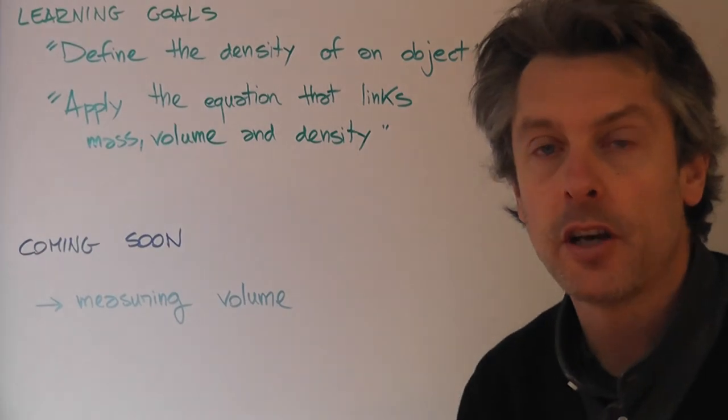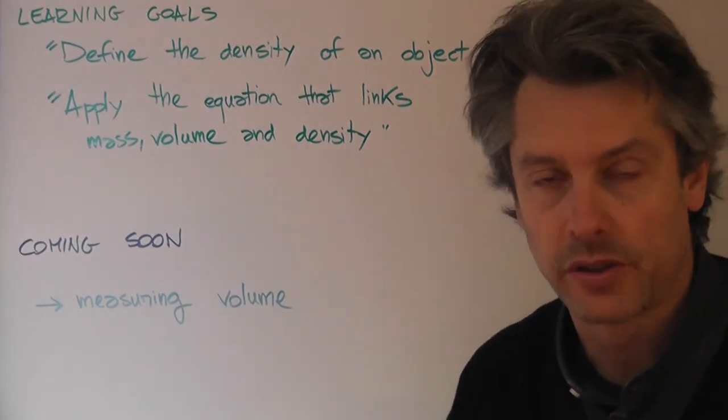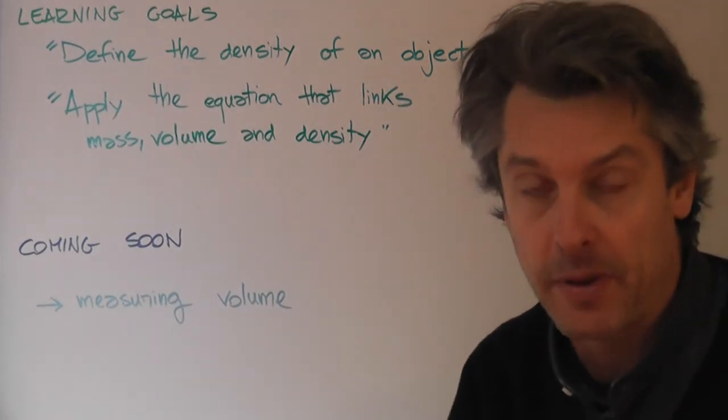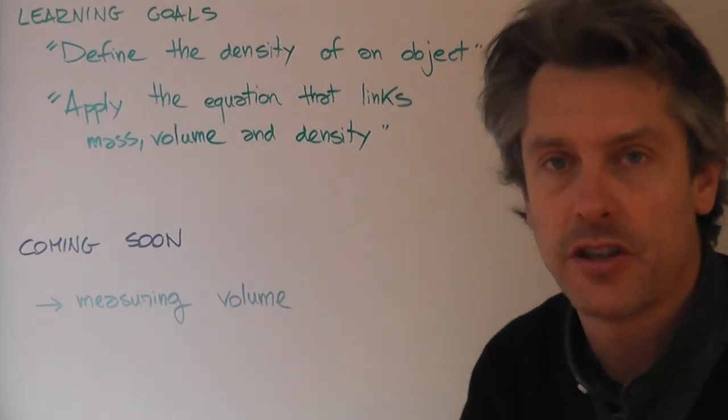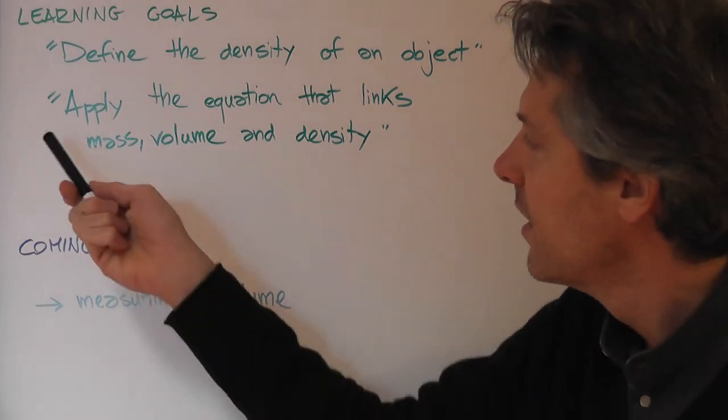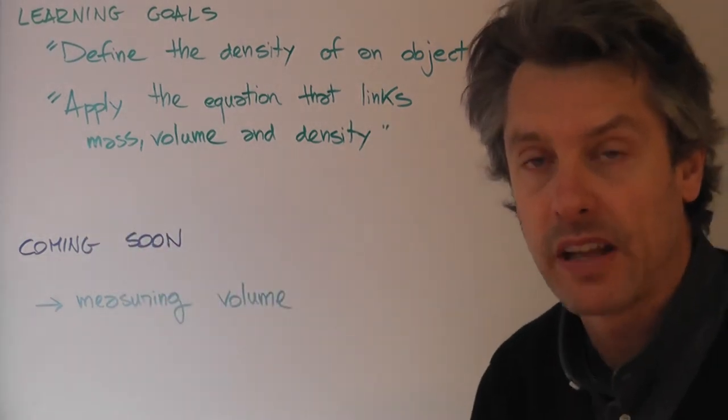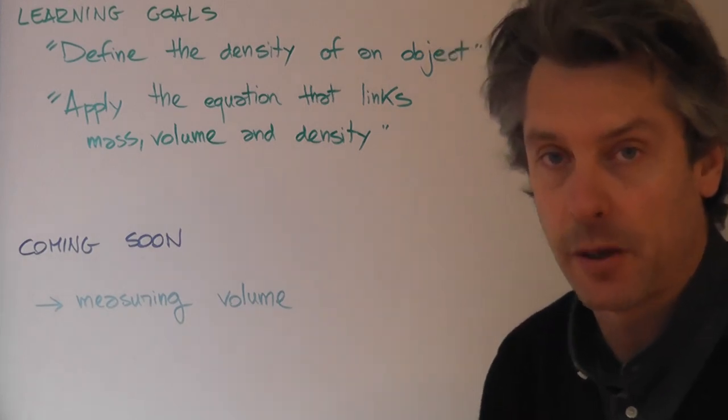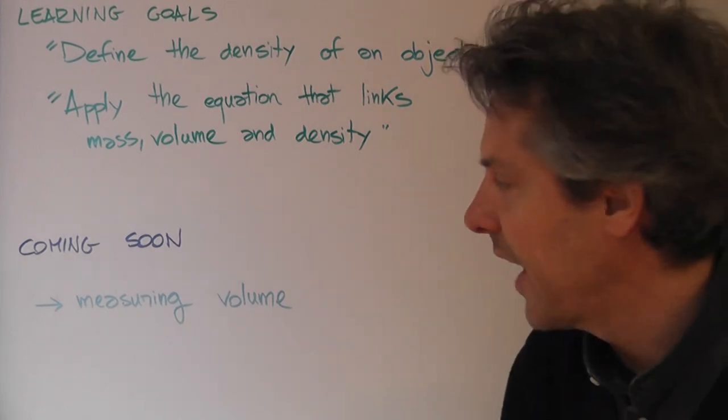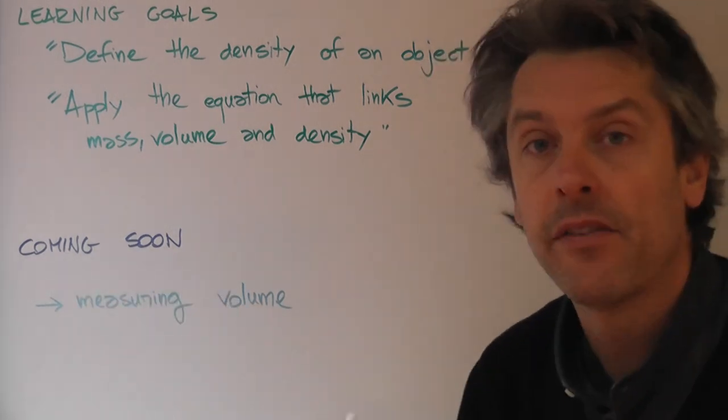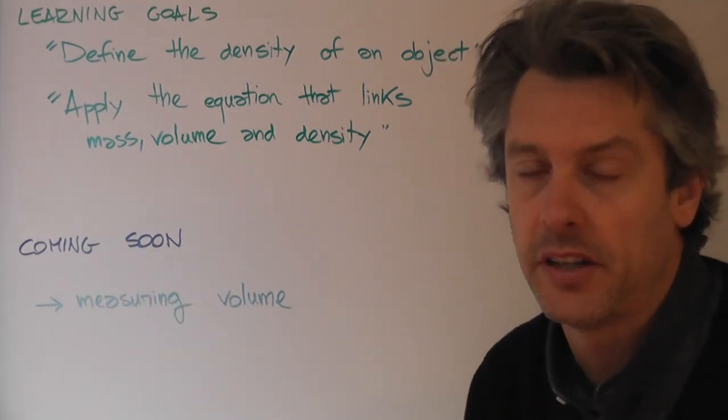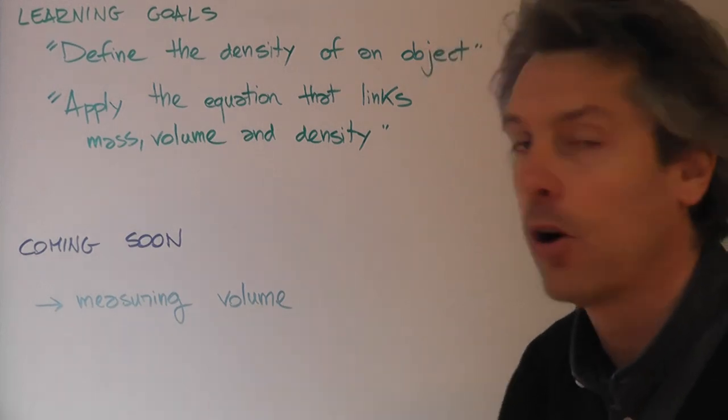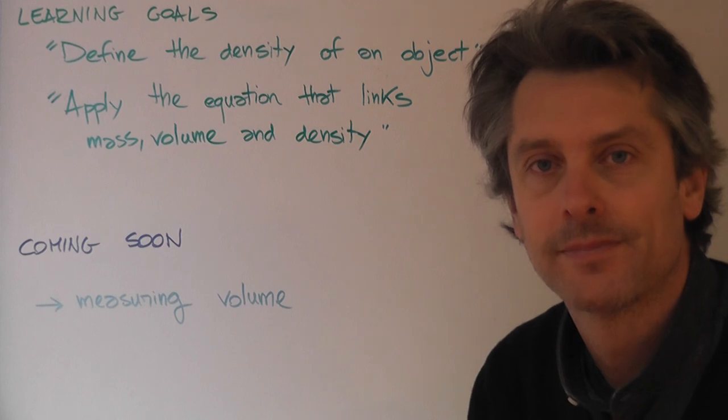So what were the learning goals of this lesson? First, define the density of an object, giving the definition of this physical quantity. Second, apply the equation that links mass, volume, and density. We're going to work more on that. The next and final lesson for this unit on measurement and units will be how we can measure the volume of an object. Goodbye.